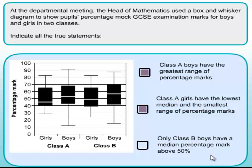Finally, statement three: only class B boys have a median percentage mark above 50. Let's look at 50% on the chart and check the median lines. Scrolling along — here's one that's over 50, and that's class A boys. So that's a false statement. We found something contrary to it, so this one's false and we leave that one uncoloured.